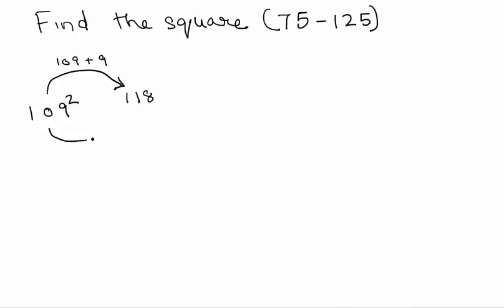And on the other side, what we will do is, we will take the same number 9 and square it. So, it becomes 81. So, the answer here is 11881. That's pretty simple, just like the last method that we saw.